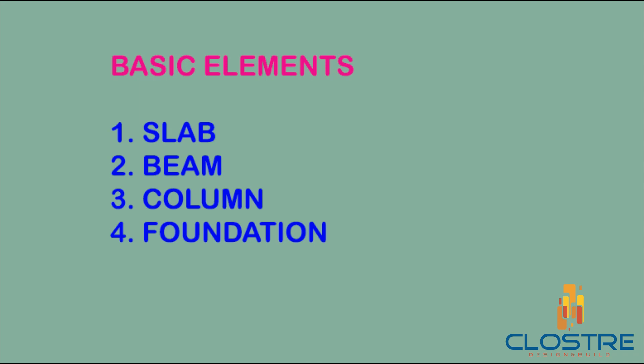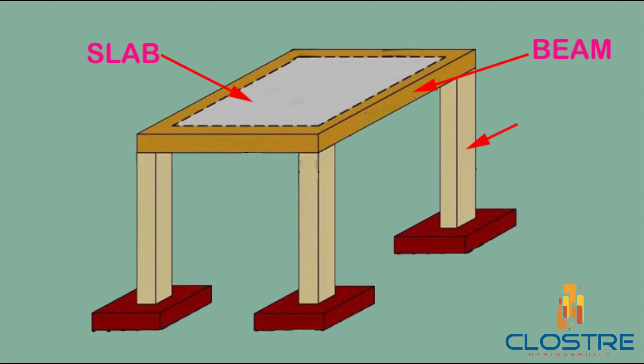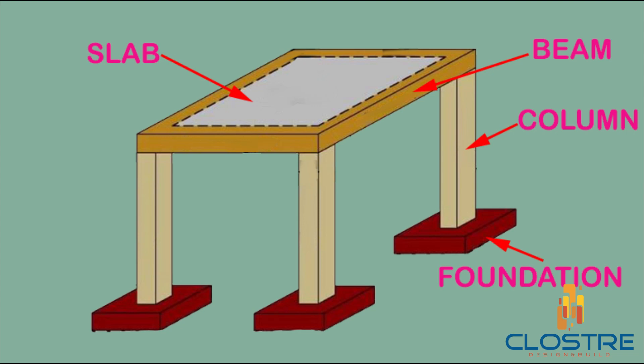Basic structural elements: slab, beam, column, and foundation. In this picture, there are all the structural elements. The first one is the slab, the second one is the beam, the third one is the column, and the fourth one is the footing.